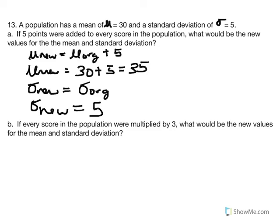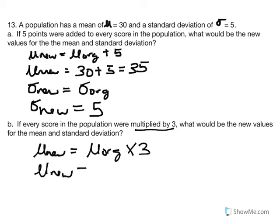The next example: if every score in a population were multiplied by 3, what would be the new mean and standard deviation? Our rules of scaling say that the new will equal the original multiplied by 3. Therefore, the new mean is equal to the original, which was 30, multiplied by 3, and so the new mean is equal to 90.